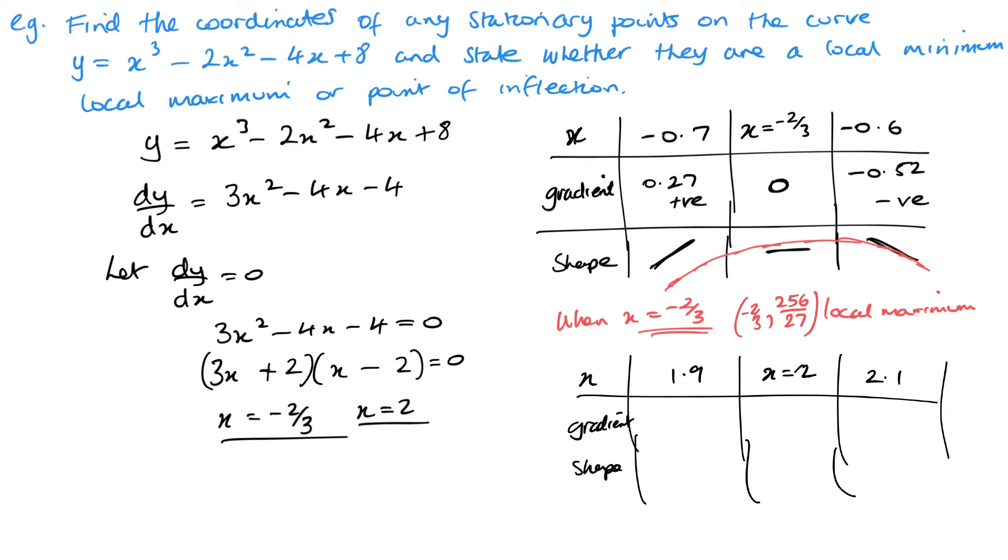So the first one gives me -0.77, which is obviously negative, so that has a shape pointing down. This one is 0—it's obviously then horizontal. And then we get 0.83, which is positive, and then we've got it going up as a positive gradient. So you can see now the shape is a local minimum. So it's (2, 0)—we have a local minimum.